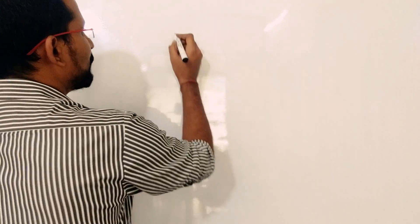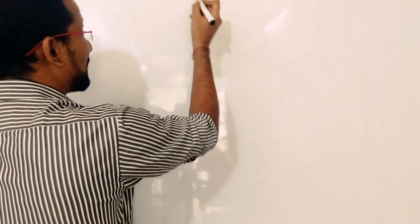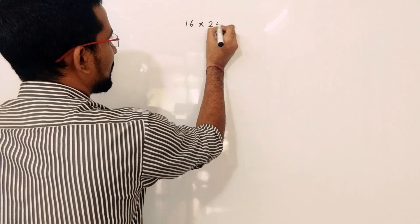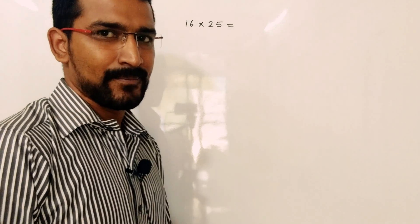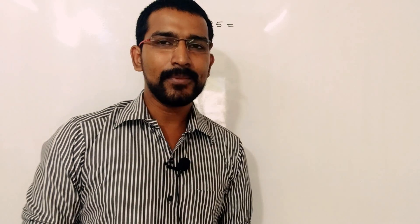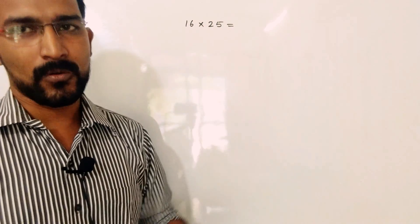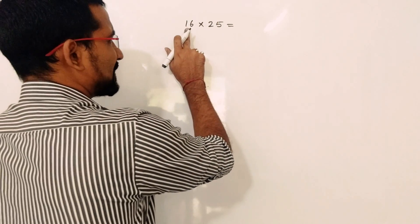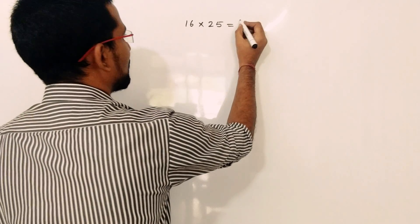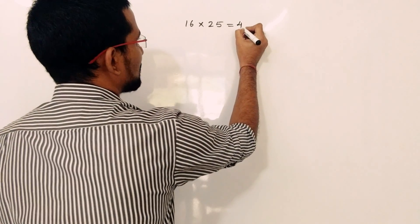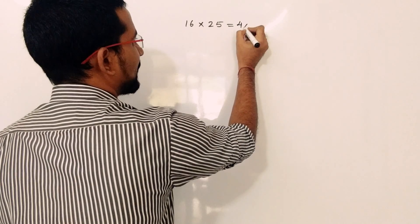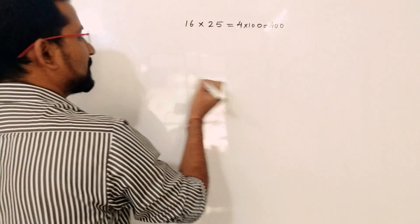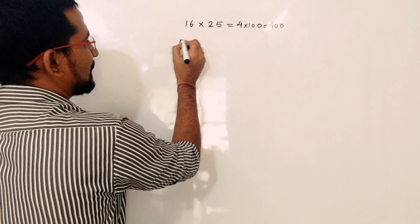Now we will take an example of how to multiply any number by 25. We'll start with the same small example: 16 into 25. While multiplying by 25, you have to divide that number by 4 and multiply the result by 100. So 16 divided by 4 is 4, then multiply by 100, so the answer is 400.